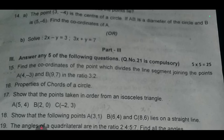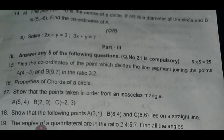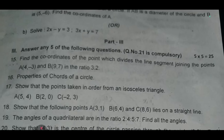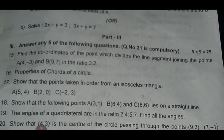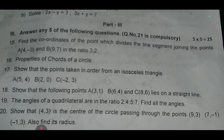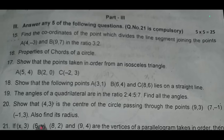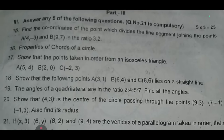Seventeenth one: show that the points taken in order form an isosceles triangle: (5, 4), (2, 0), (-2, 3). Eighteenth one: show that the following points A (3, -1), B (6, 4), C (6, 8) lies on a straight line. Nineteenth one: the angles of a quadrilateral are in the ratio 2 is to 4 is to 5 is to 7, find all the angles.